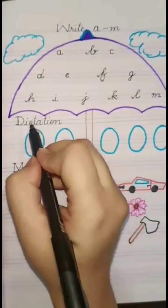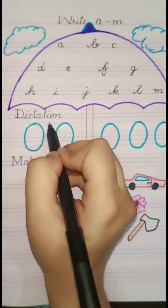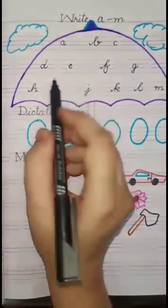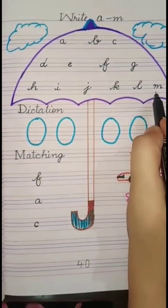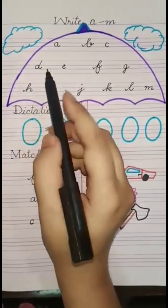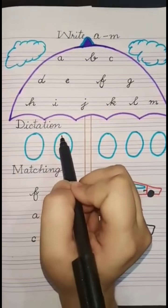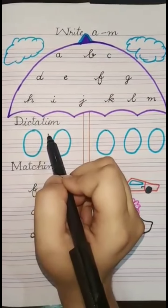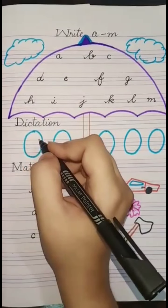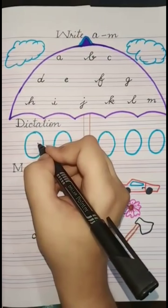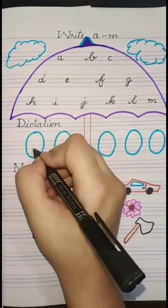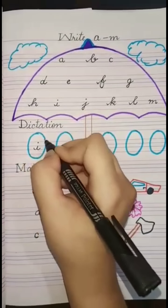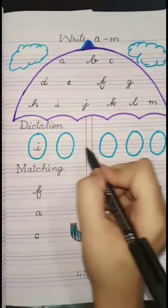Next topic is dictation. You have to complete a to ma dictation words at home. For example, one word is — we write I — we have two lines here, I write I, Import. This way you have to complete your dictation words at home.